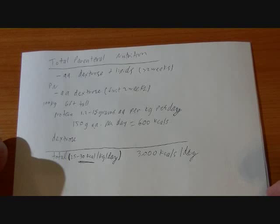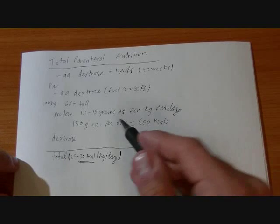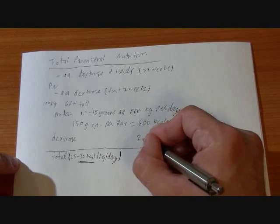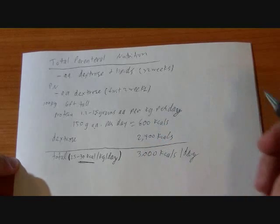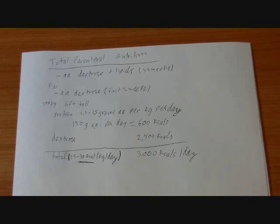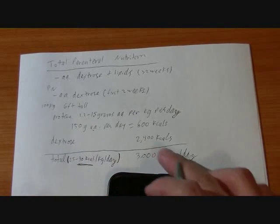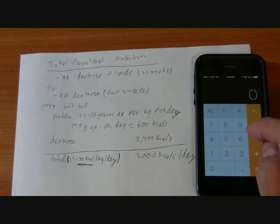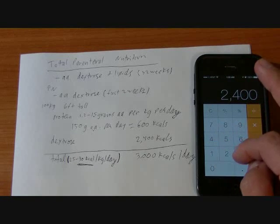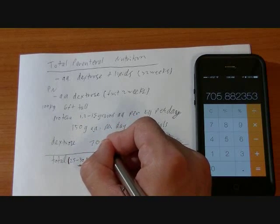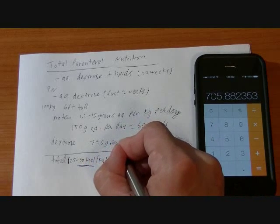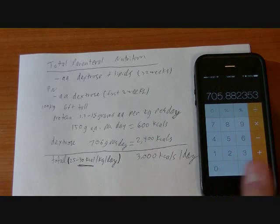So the difference for the dextrose, you can subtract it out. You want to have 2,400 kcals of dextrose. Now sugar is usually 4 kcals per gram. Dextrose is 3.4. So to make up for that, we do 2,400 divided by 3.4 equals 706 grams. And that's how we get it.